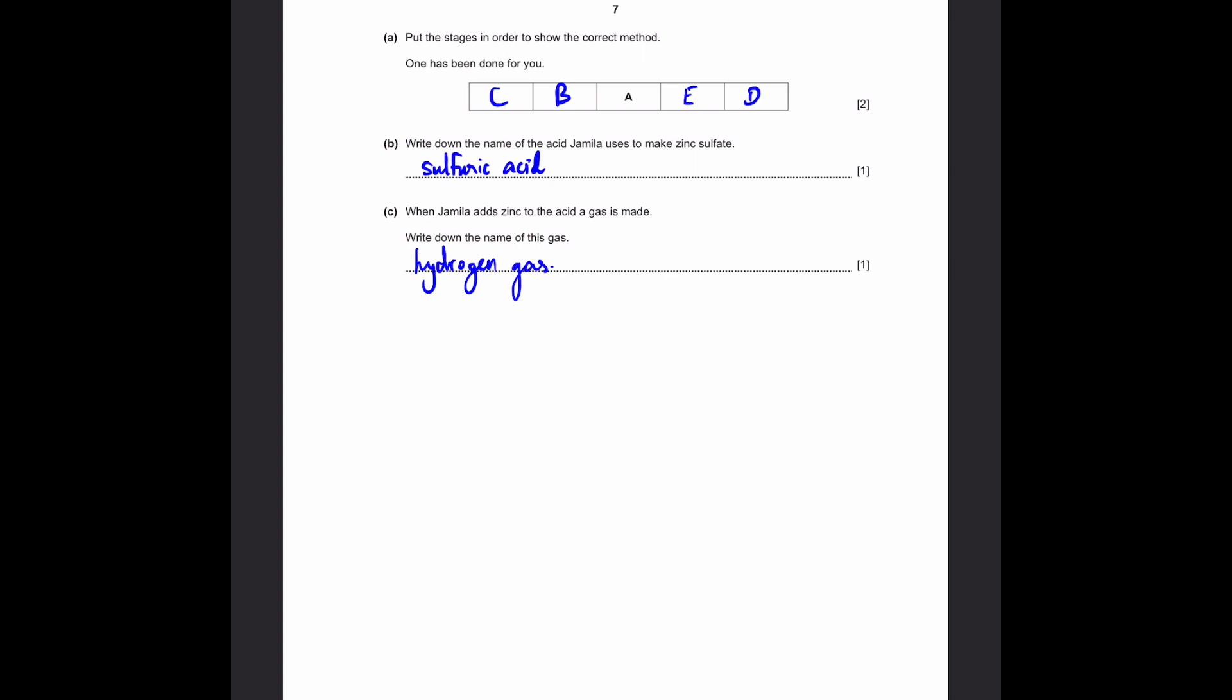Write down the name of the acid, Jamila uses to make zinc sulfate. We are having a zinc and we are adding an acid to get zinc sulfate. And because of sulfate, we have to use sulfuric acid. When Jamila adds zinc to the acid, a gas is made. Write down the name of this gas.